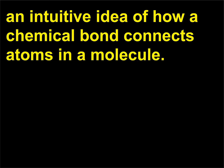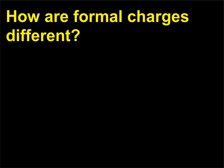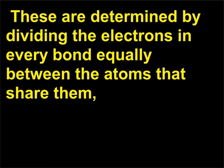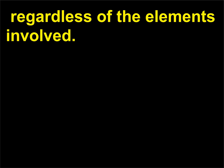How are formal charges different? Formal charges are given for individual atoms within molecules. These are determined by dividing the electrons in every bond equally between the atoms that share them, regardless of the elements involved.